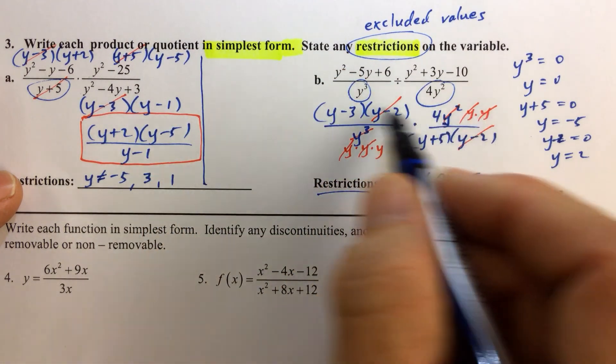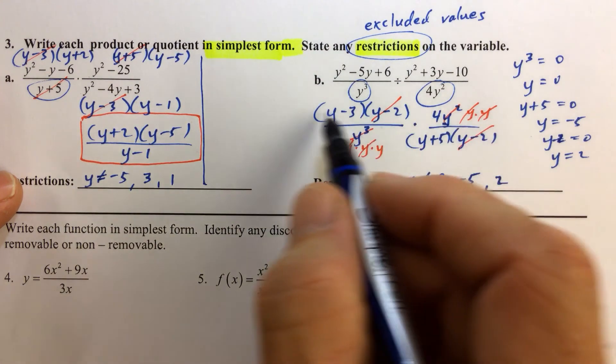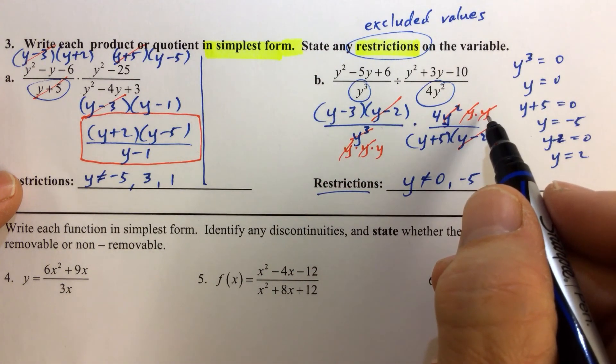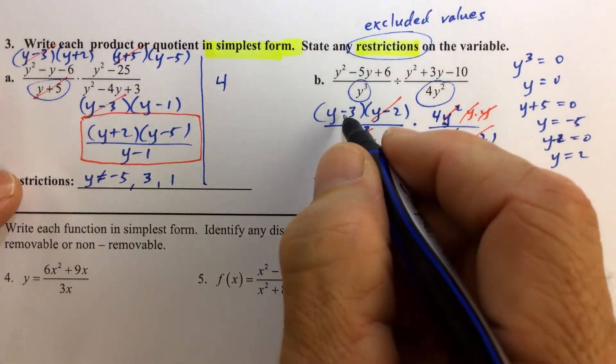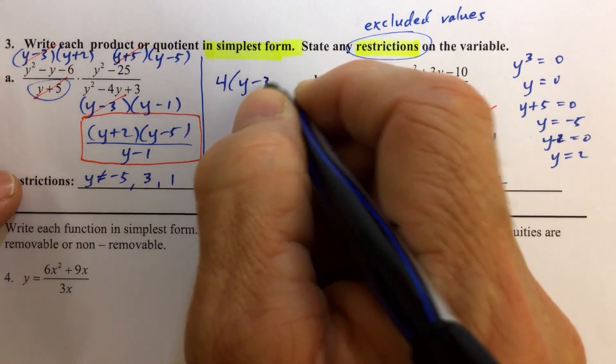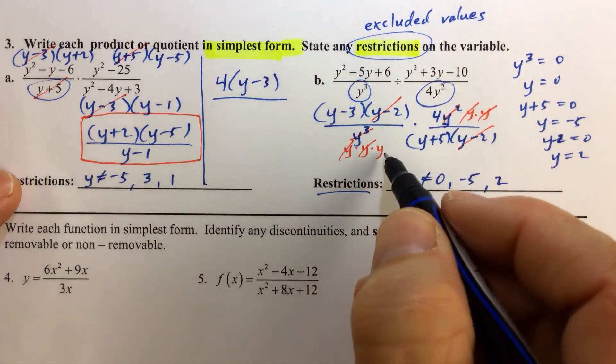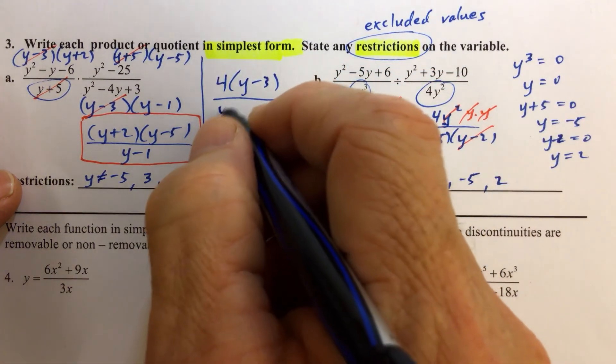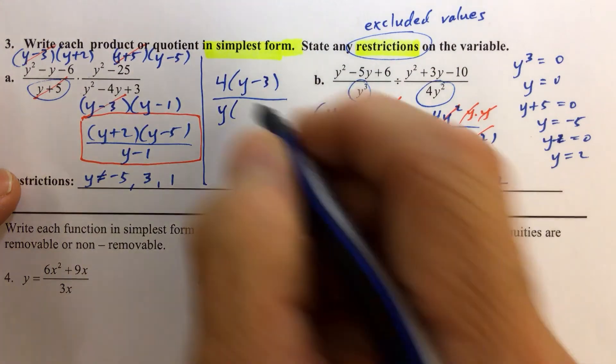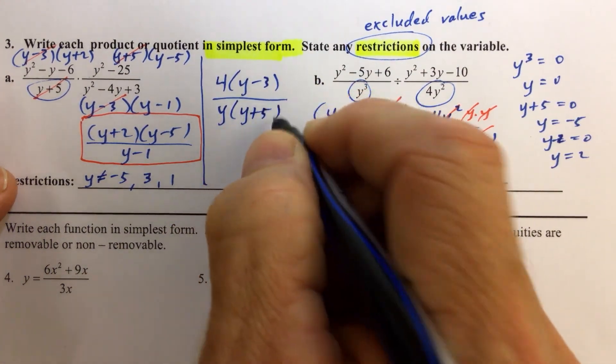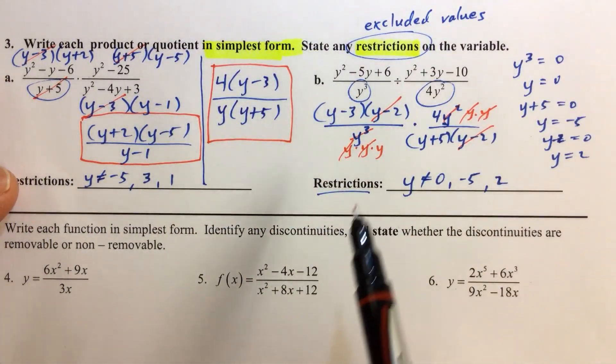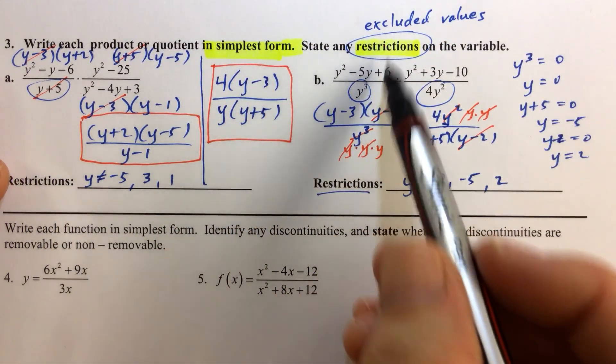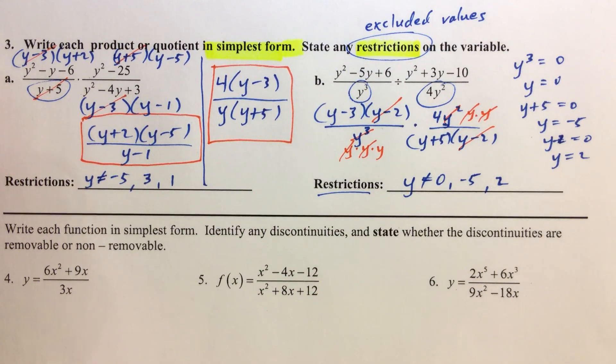We're just going to rewrite every factor in the numerators that did not get canceled. This 4 didn't get canceled, the y minus 3 didn't get canceled. Down below, this y didn't get canceled, and neither did the y plus 5. So that's our simplest form. We've met our two objectives: simplest form, stating restrictions, and we're good to go.